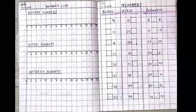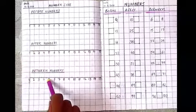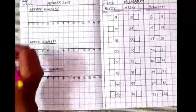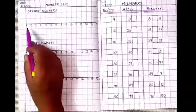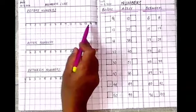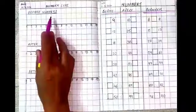Here we are doing before, after and between numbers. Okay, write today's date here, 21-7-2020. These are your number lines. Okay, let us do before numbers.